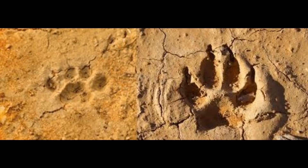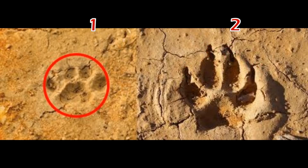Notice that track number two is the only one showing claws in the track. Now notice that track number one is about as wide as it is long, whereas track number two is longer than it is wide.